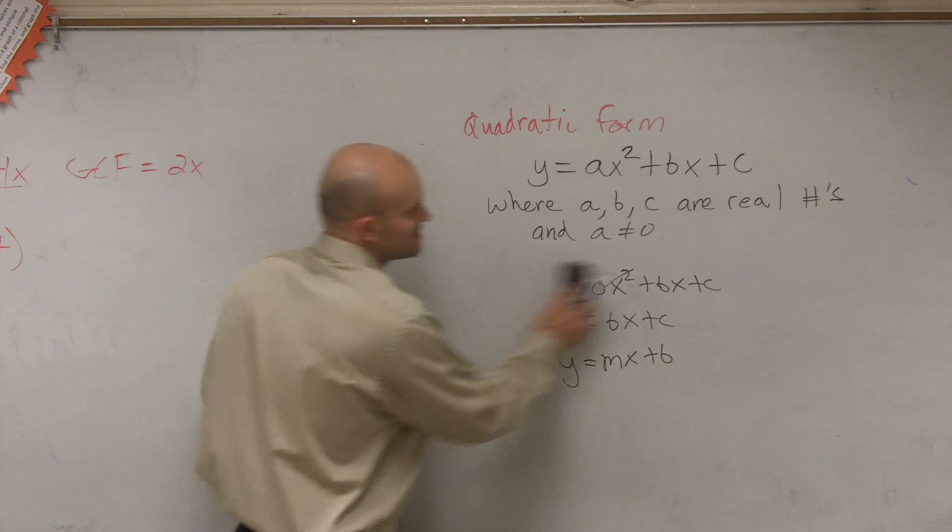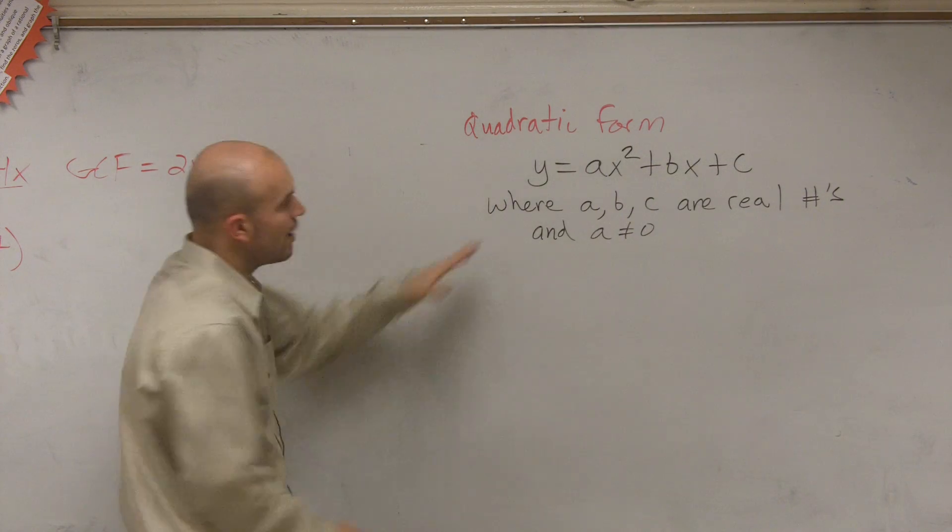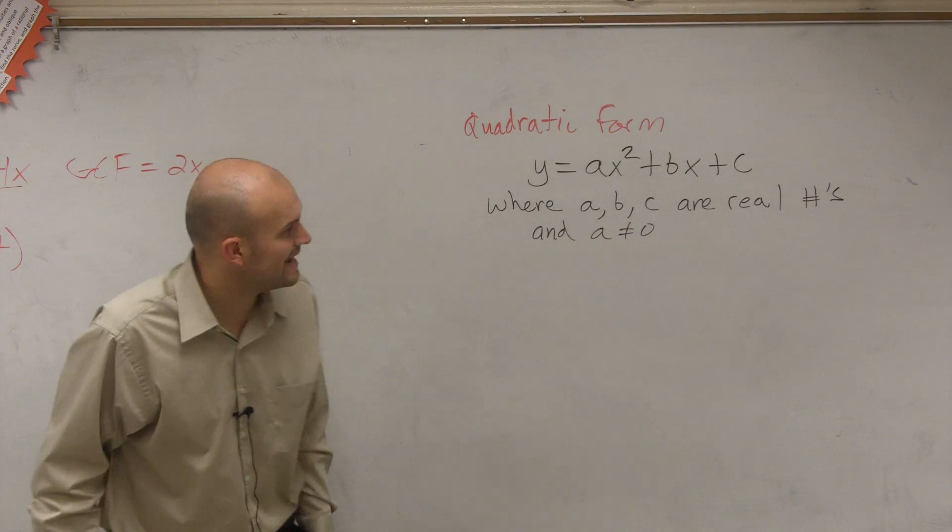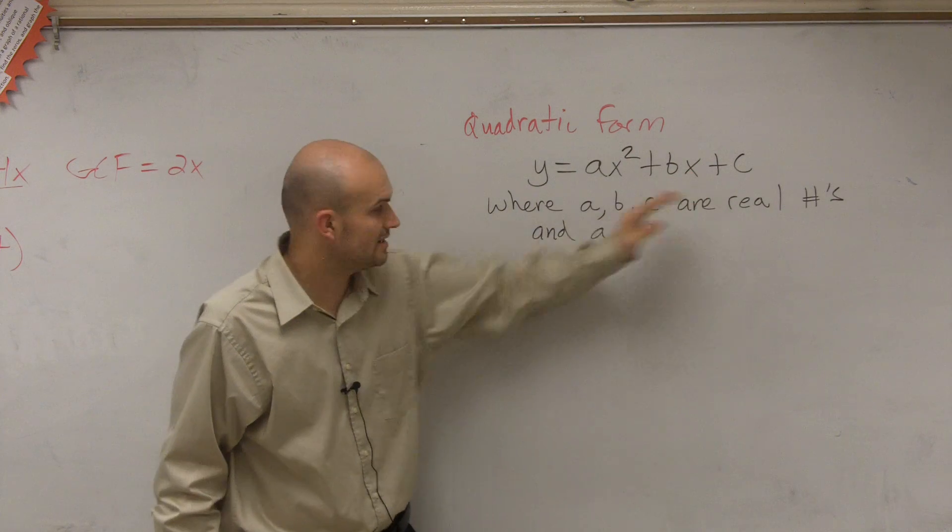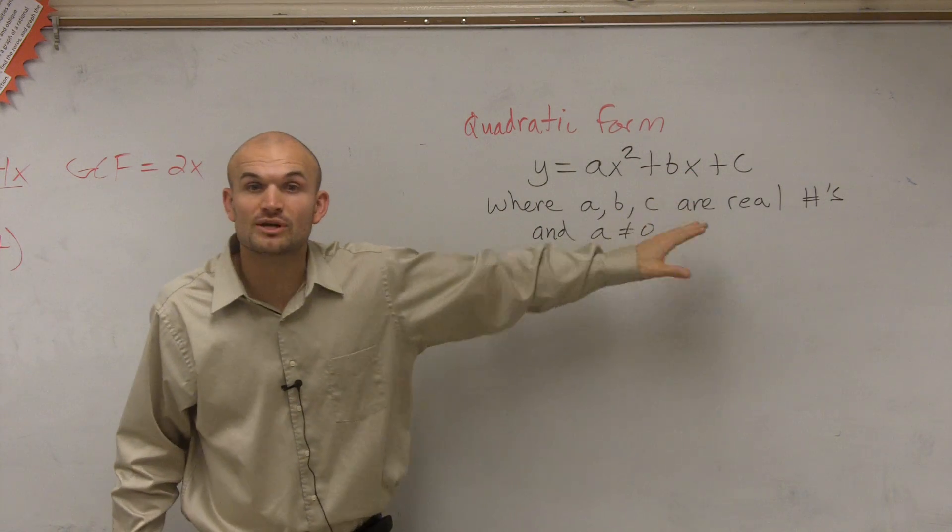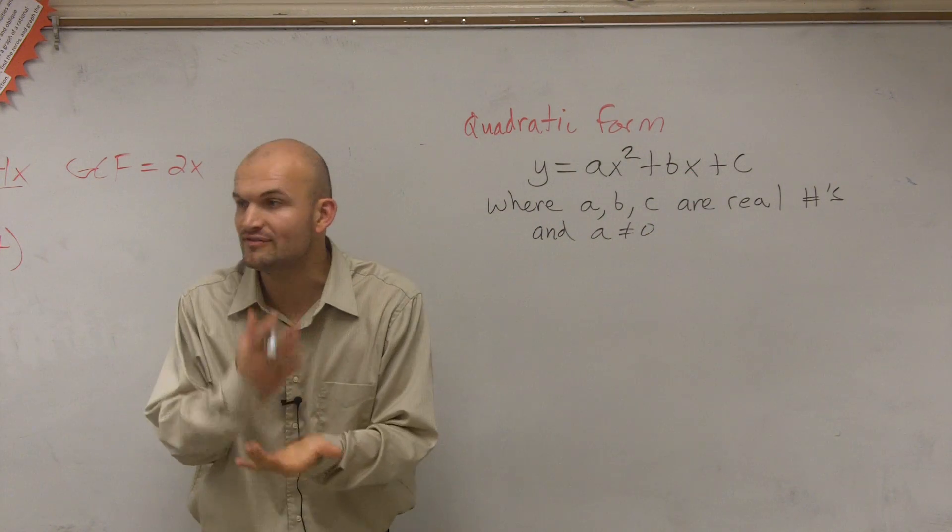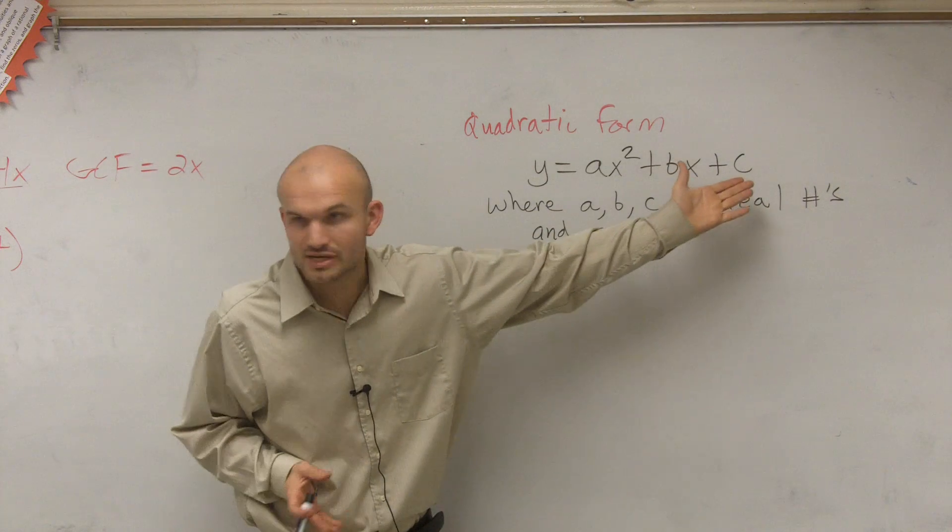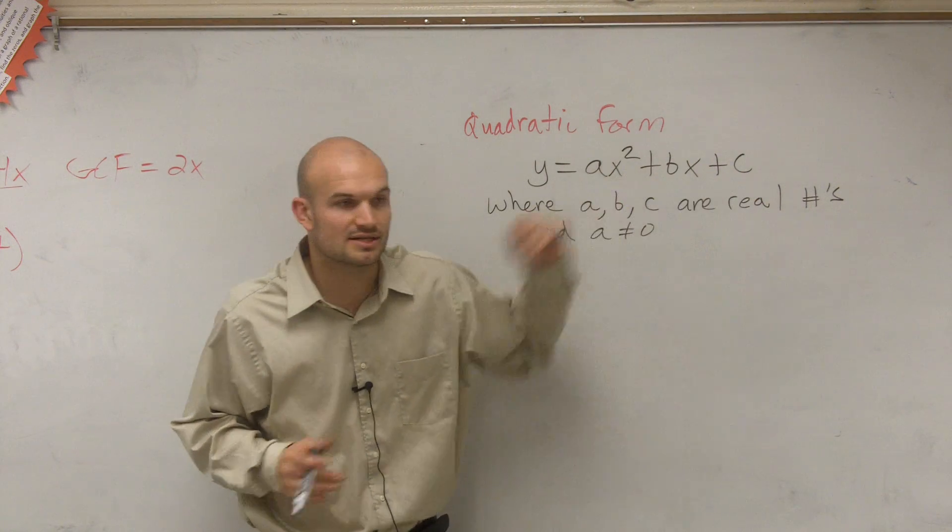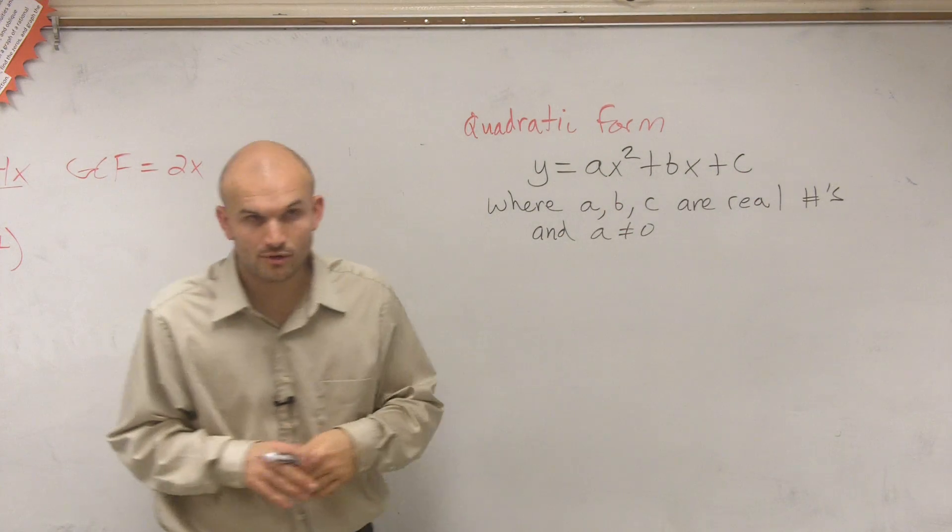So the main important thing you guys just need to know is your quadratic equation is y equals ax squared plus bx plus c, where a, b, and c are real numbers. And these are what we're going to call our coefficients, except for c is actually a constant, because it doesn't have a variable. So these are going to be your real numbers.